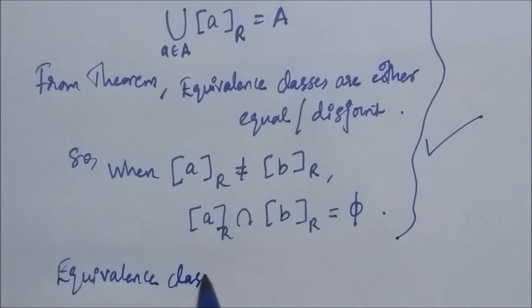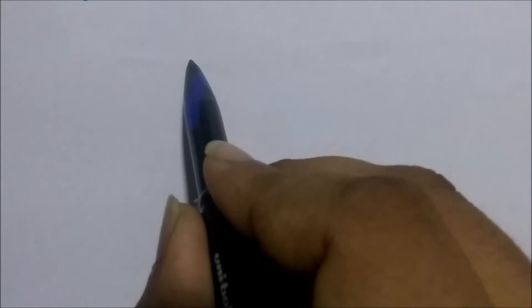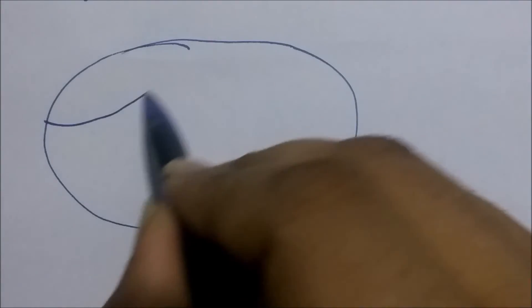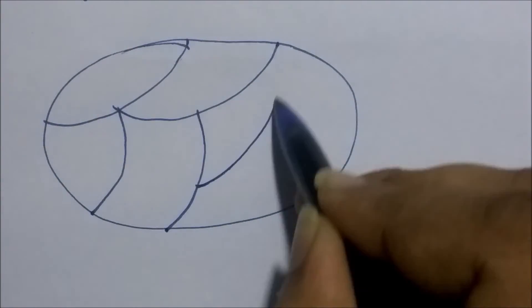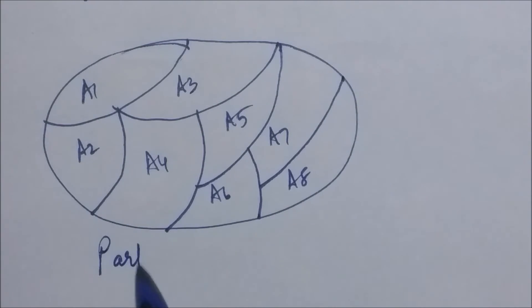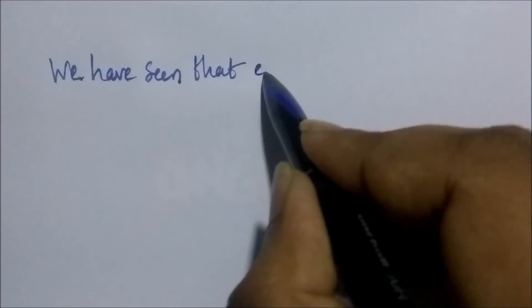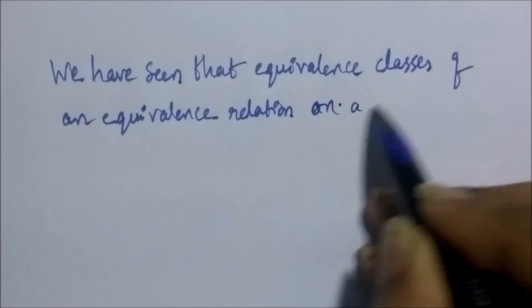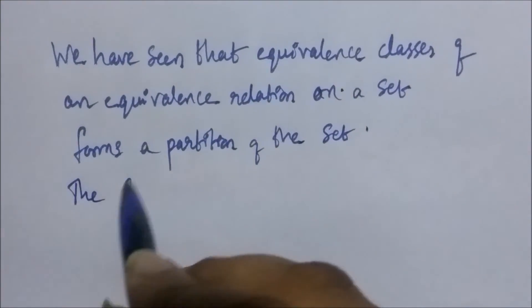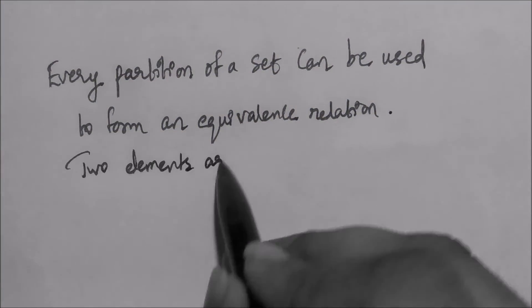These two observations show that the equivalence classes form a partition of the set A because they split set A into disjoint subsets. A partition of a set S looks like a collection of all disjoint subsets of S — disjoint means their intersection is empty — and the union of all these disjoint subsets gives the set S itself. So far we have seen that equivalence classes of an equivalence relation on a set form a partition of the set. The subsets in the partition are the equivalence classes.